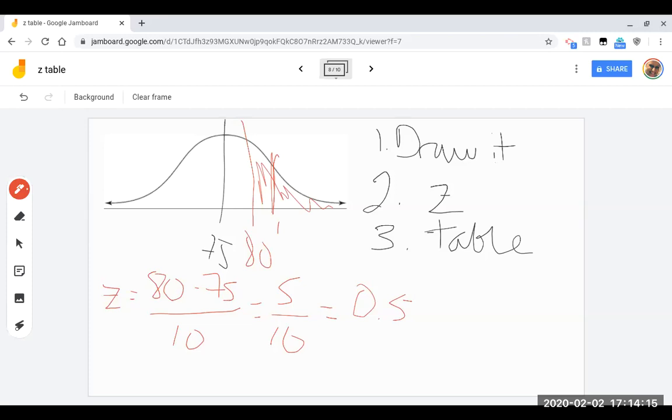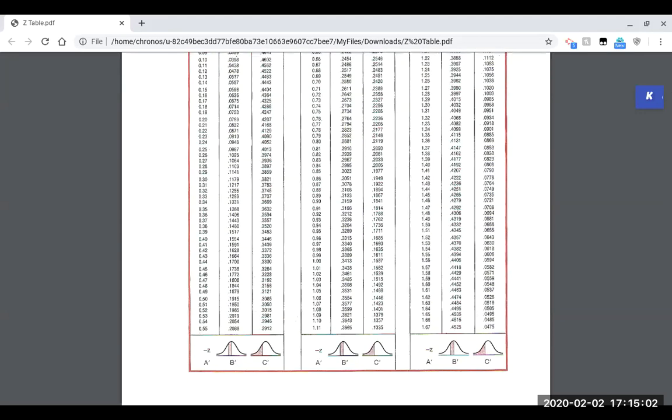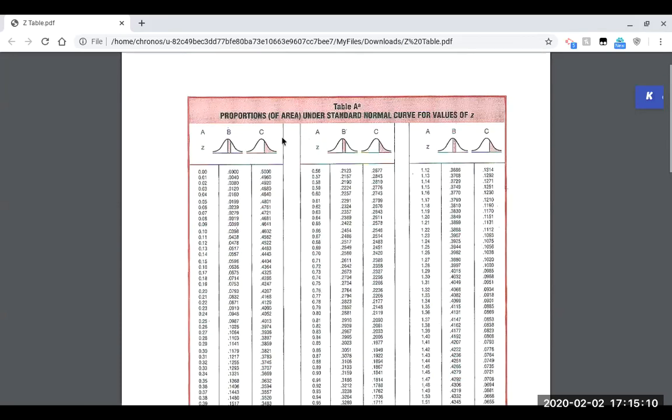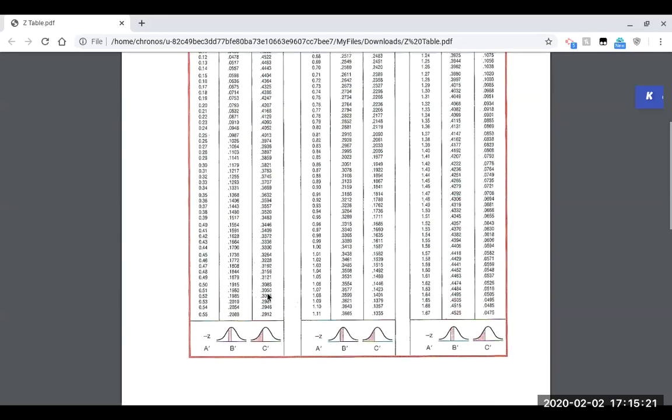So we know our Z-score is 0.5, and now I want to look up in the table what percentage of scores are above a Z-score of 0.5. So let's go look at the Z-table. So now we have our Z-table pulled up. Now we want to find a 0.5. Now be careful, don't go looking up 0.05, that's a different number. We want to look up 0.5. So if I find a 0.5, and remember my question was what percent of scores are above the 0.5? So if I look at my picture clearly the C column is answering that question, well above my number. This line represents my number. So if I come down to 0.5, the C column is going to tell me the answer is 0.3085, otherwise known as 30.85%.